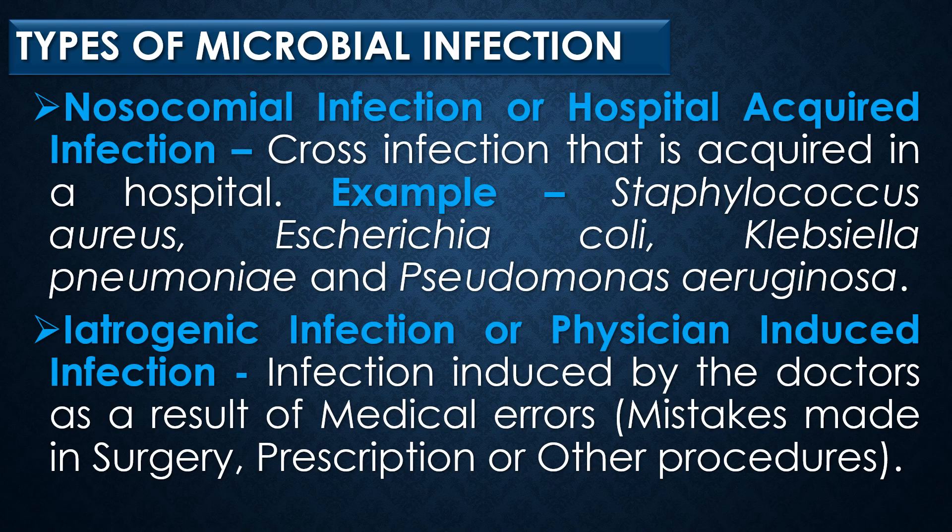Next is nosocomial infection, also called hospital-acquired infection. A cross infection that occurs in a hospital or other healthcare facility is called nosocomial or hospital-acquired infection. Examples include infections caused by Staphylococcus aureus, E. coli, Klebsiella pneumoniae, and Pseudomonas aeruginosa.